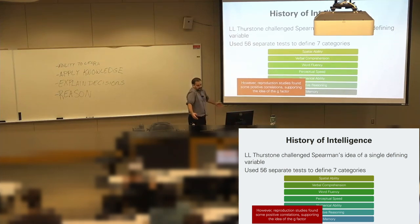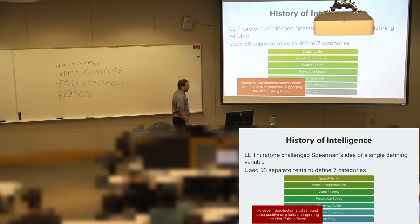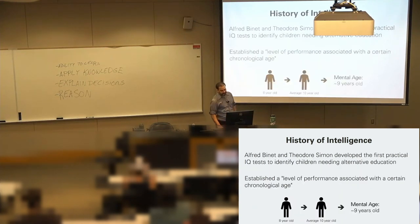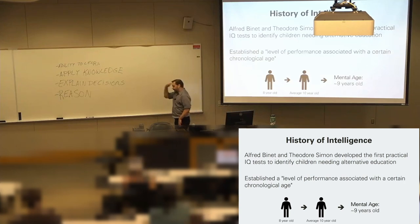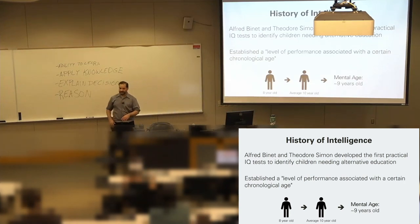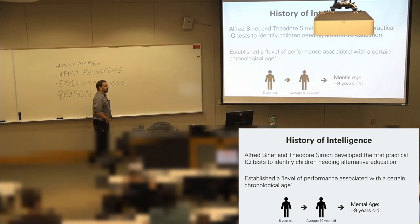Thurston disagreed with Spearman, looking at 56 different tests and breaking them into seven categories: spatial ability — understanding object rotations, which is actually a strong indicator for success in computer science — verbal comprehension, word fluency, perception speed, numerical ability, reasoning ability, and general memory. Still missing things like emotional intelligence and musical acuity.